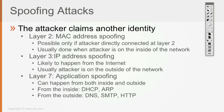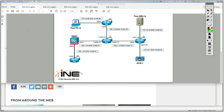We have layer 3 spoofing, which means IP address spoofing, which is likely to happen from the internet. Usually the attacker is on the outside of the network. That's when the attacker is going to spoof somebody's identity, claim somebody else's identity, and send illegitimate traffic that appears to come from a specific source but is actually spoofed.